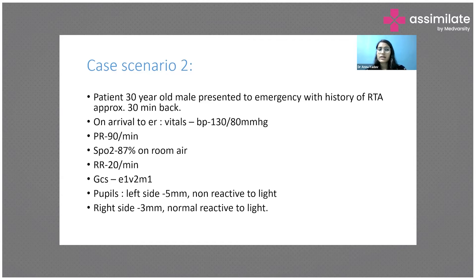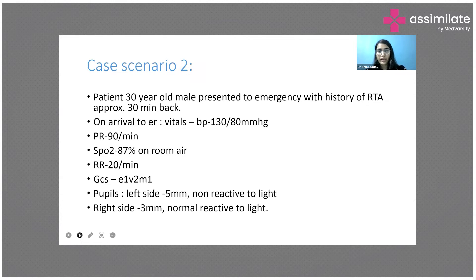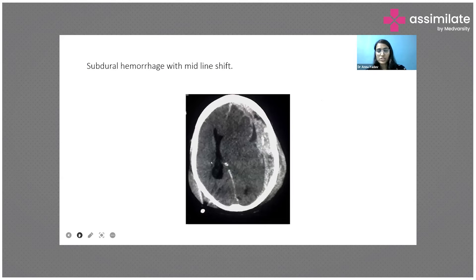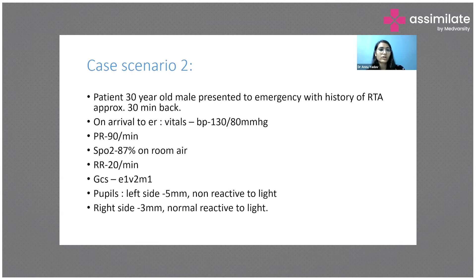GCS has already been discussed. Pupils: on the left side, 5 mm and not reactive to light; on the right side, 3 mm and normally reactive to light. Looking at this case, how are we going to approach this patient?